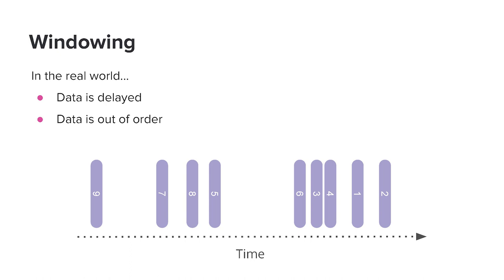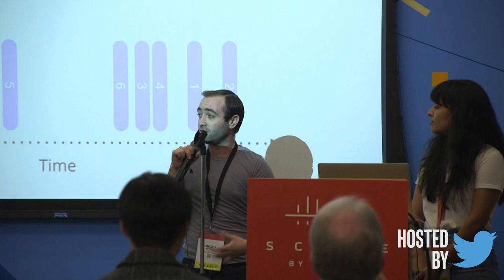In a streaming system, data is delayed and out of order. There's a particular challenge for Lyft because our data comes from our mobile apps, and mobile apps are on slow cellular connections. They might be buffered by the app, or they might be offline for a time period. So we might get events that are arbitrarily delayed. But we still need to be able to do these computations in a timely way.